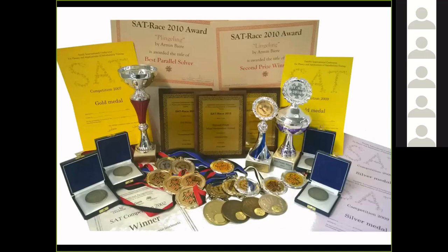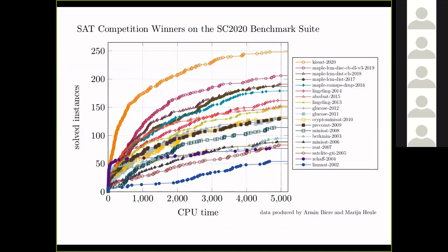Why am I talking about SAT? Here's an old picture from 2015 where my dean asked me to prepare a picture of what I'm doing. More recently, I want to show you this cumulative distribution function plot — we switched to this from the cactus plot this year. On the X axis you see time, on the Y axis how many benchmarks a certain solver has solved. I listed all the winners of the SAT competition since 2002. LIMAD in 2002 was one of my solvers, as were Pricosat and the two Lingelings, and most recently my Kissat solver won the competition this year. This plot really shows we saw a lot of progress in the last 20 years.